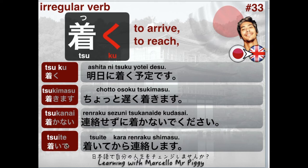The last one is the te-form. In this case we change ku to i, so it's going to be tsuite. For example: tsuite kara rinraku shimasu — I will let you know once I arrive, after I arrive. So rinraku shimasu means I will inform you. Tsuite kara rinraku shimasu — I'll let you know after I arrive in Japan, not before.